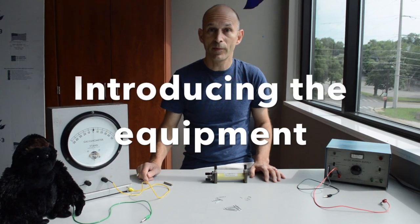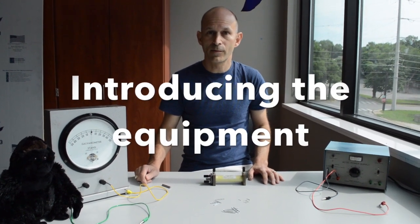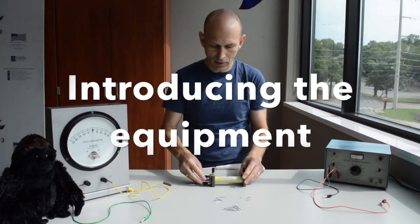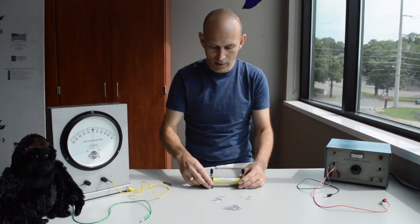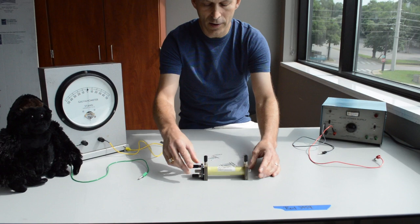Today I'm going to show you some equipment for an observational experiment that we can do. So the most important piece of equipment I have is a primary and secondary coil.